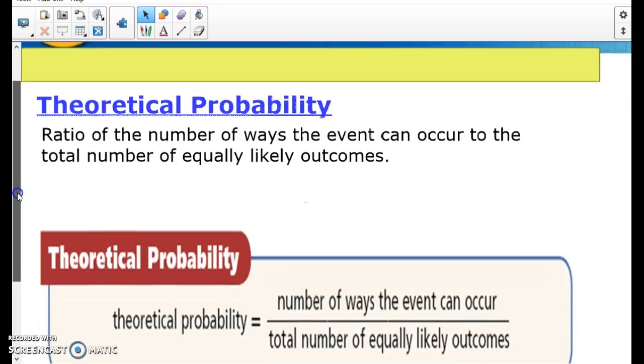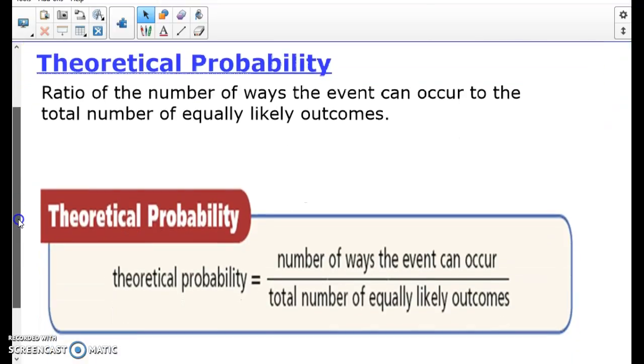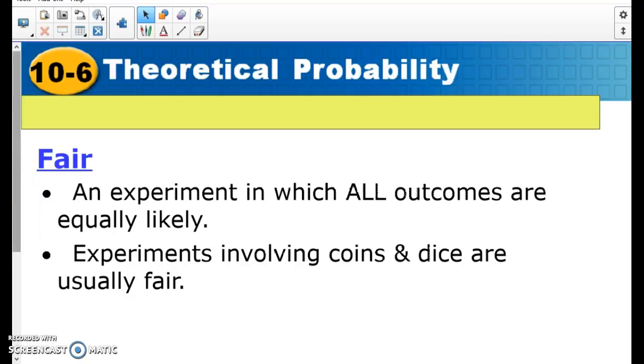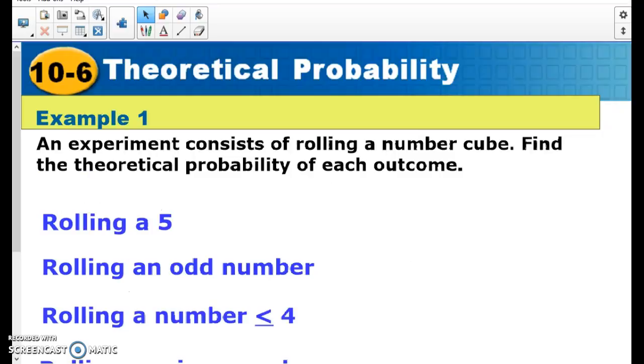So remember, theoretical probability is what should happen in theory. If I flip a coin twice, I should get one heads, one tails, but that's not always what happens. And again, make sure it's a fair experiment. You can't have a two-headed coin and say you're going to get tails, because that's never going to happen.